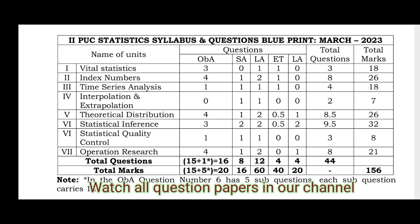For Vital Statistics: there is no Short Answer, Long Answer 1, Essay Type 1, and Objective Type 3 questions. Total Questions: 3, Total Marks: 18.